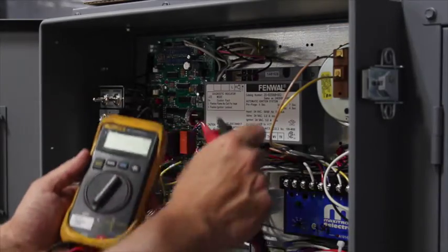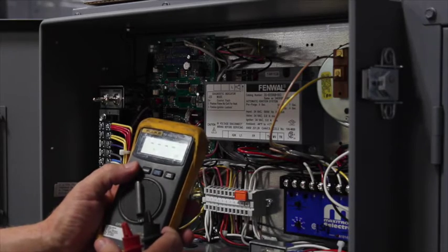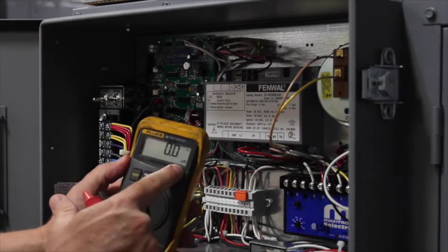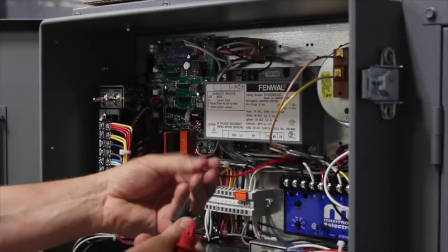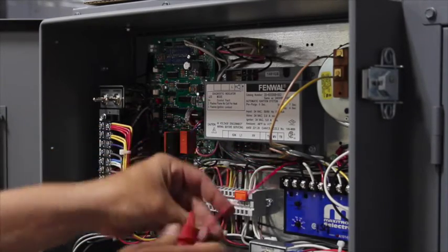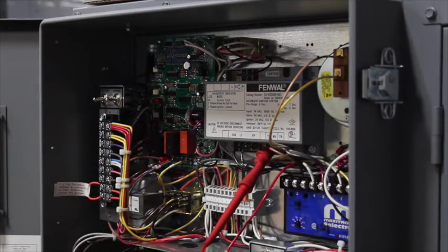When performing startup, you must first connect your DC microamp meter to the flame safeguard relay. Verify the meter is on DC microamps. Remove the red wire from the Fenwall board and connect your black lead with clip to the push-on and your red lead with clip to the spade of the board.